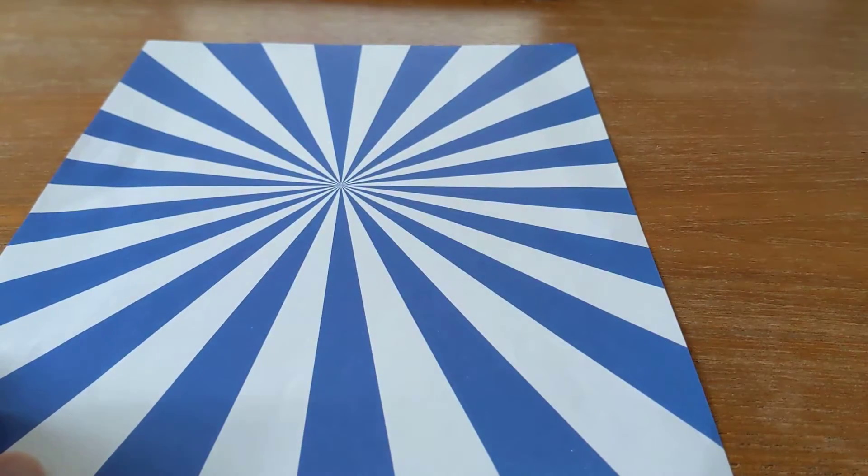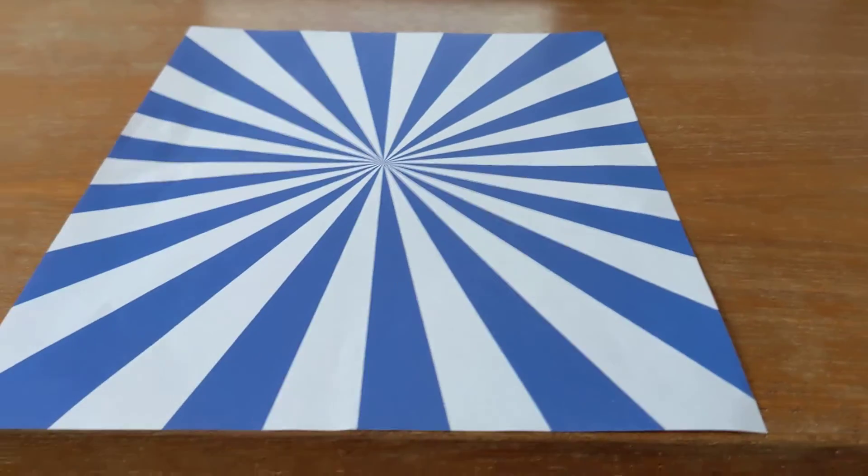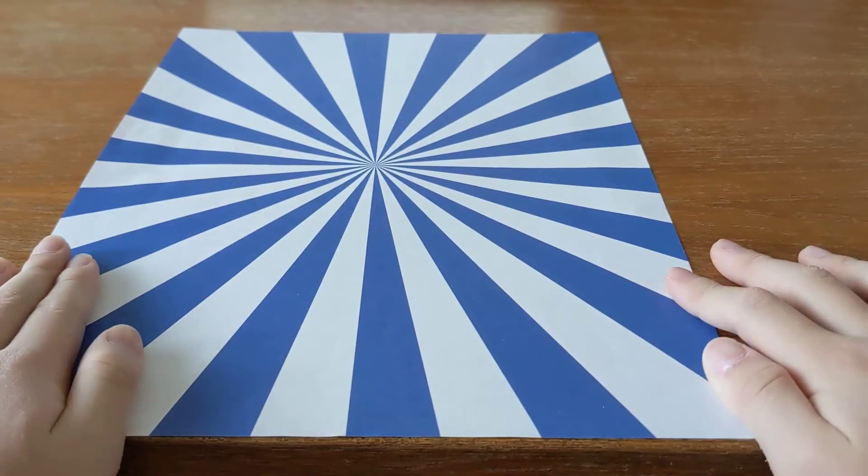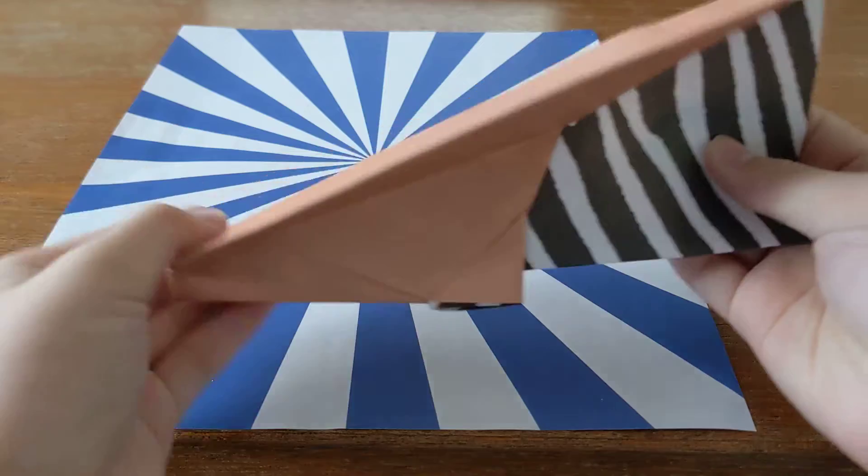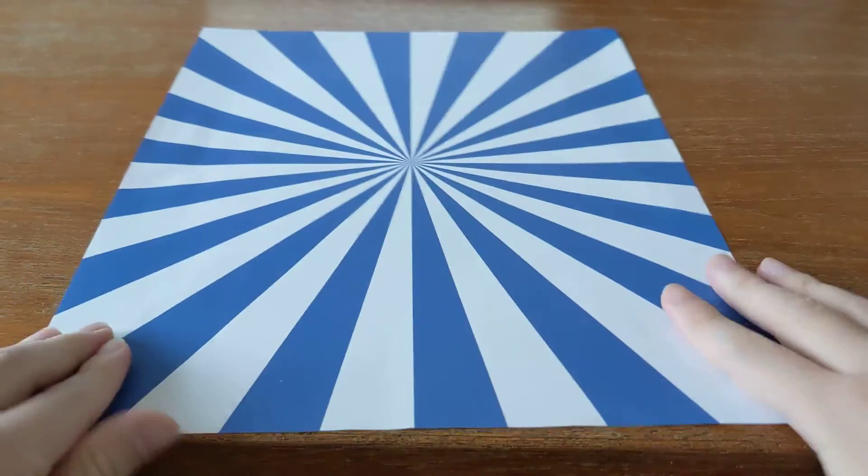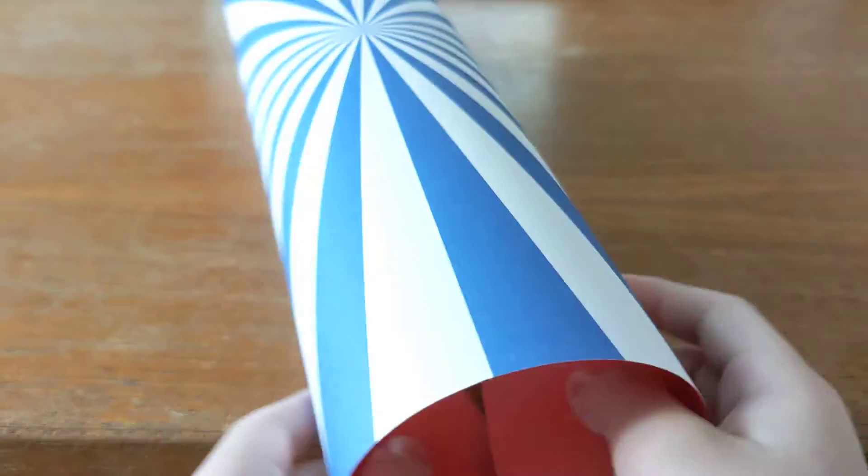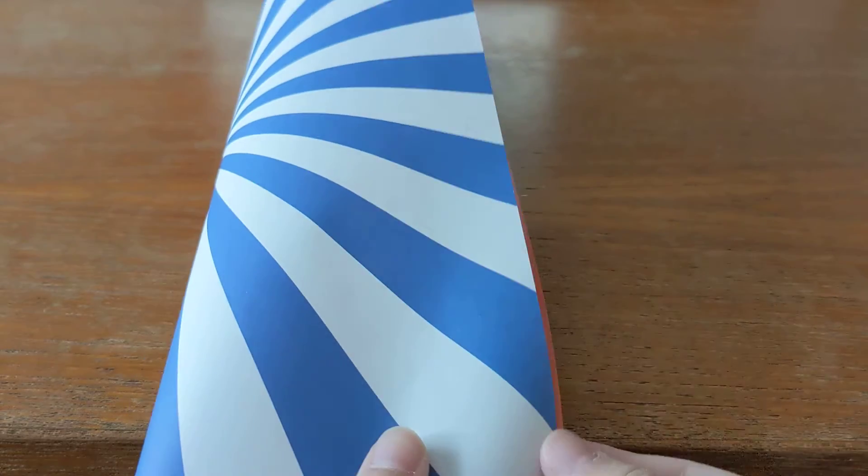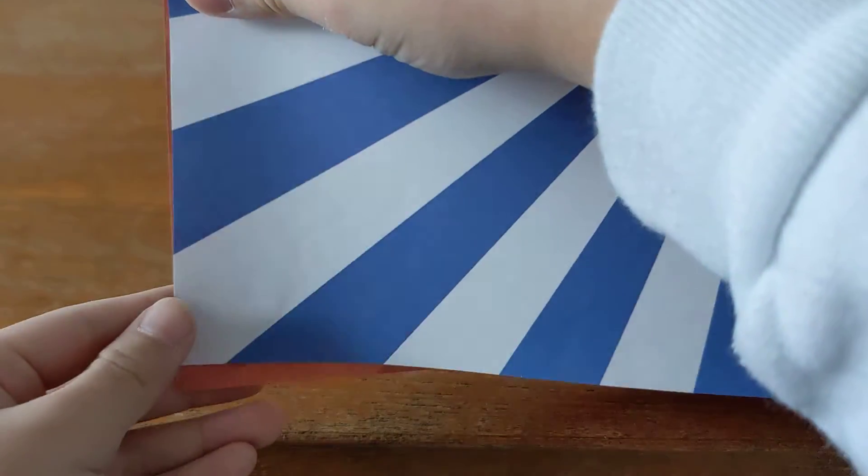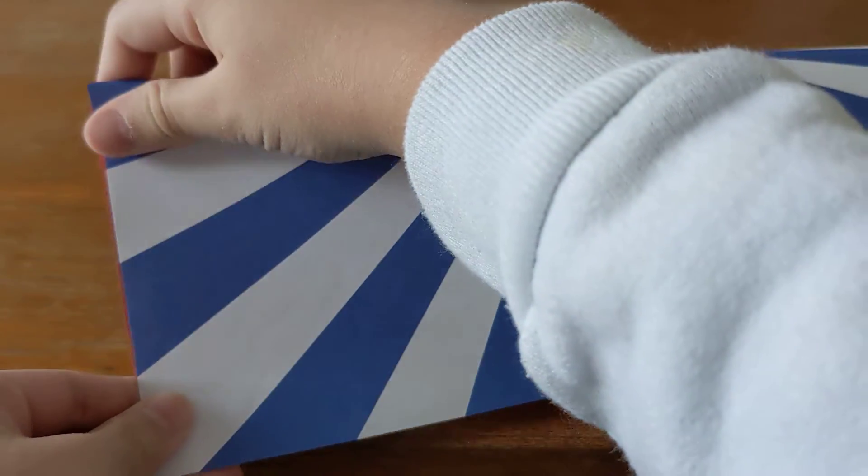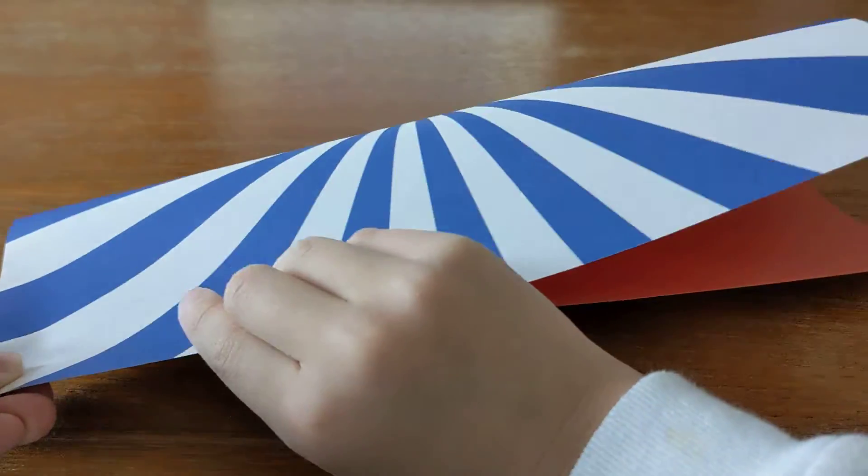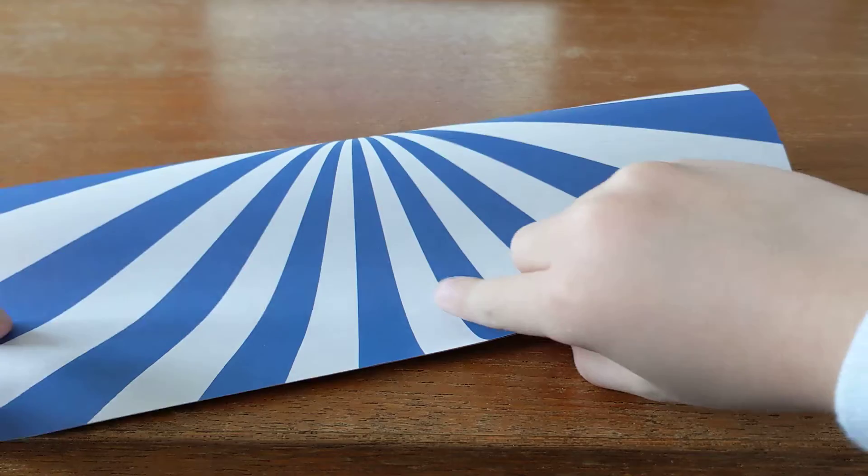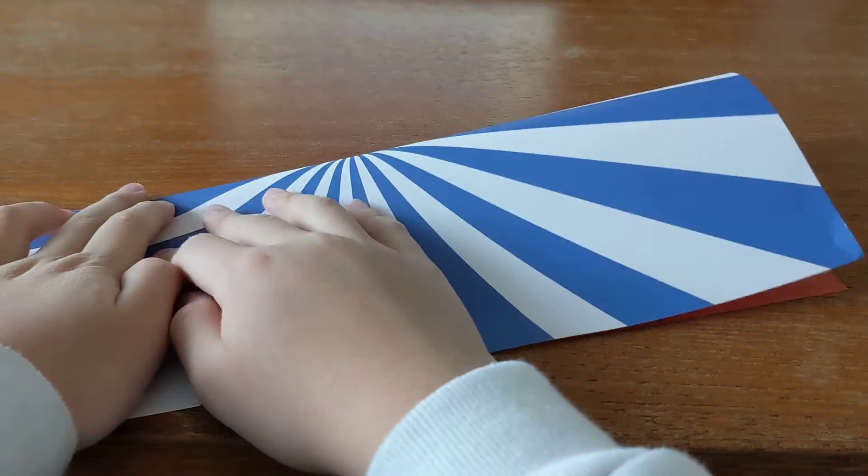As you can see, I have a piece of paper. First, in order to fold this plane, I'll simply fold it in half. Try to make them accurate as you fold.